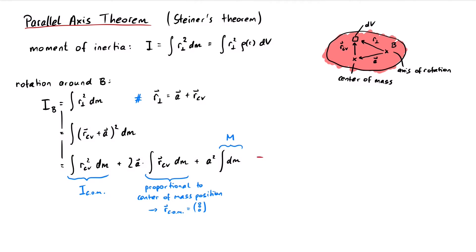There we have it. The moment of inertia around any random axis is given by the moment of inertia around a parallel axis that goes through the center of mass, plus the object's total mass multiplied by the distance between the center of mass and the axis of rotation squared.